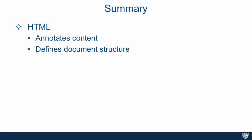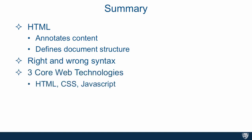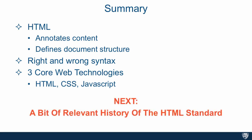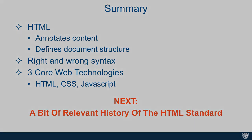So in summary, we spoke about HTML and the fact that its job is to annotate content and define document structure. And as any language, it has a right and wrong syntax which you'll have to learn. The three core web technologies — HTML, CSS, and JavaScript — work very well together because each one has its own distinct and precise role; they don't step on each other. Next, we'll talk about a bit of relevant history of the HTML standard.